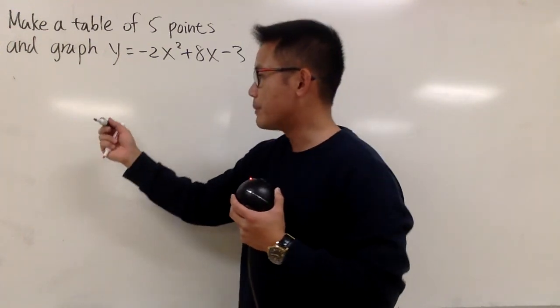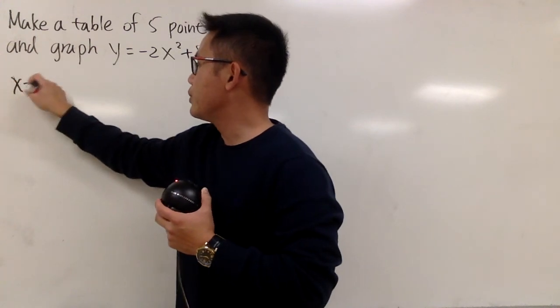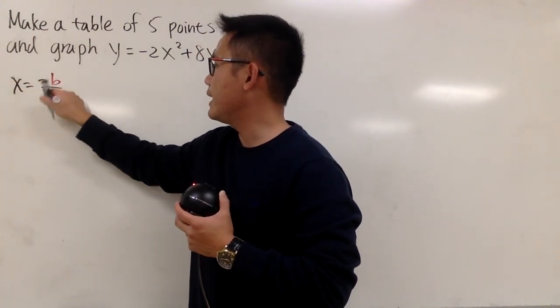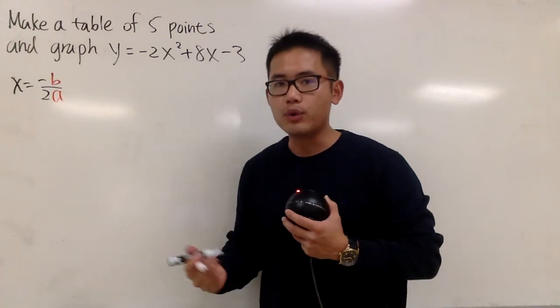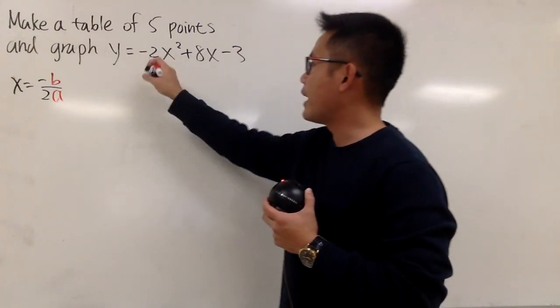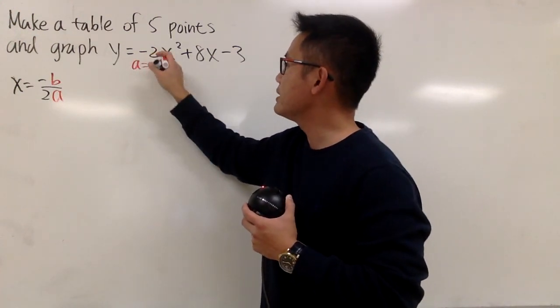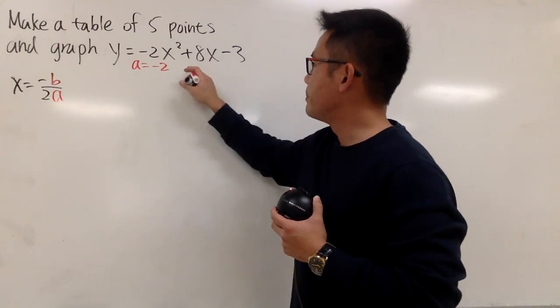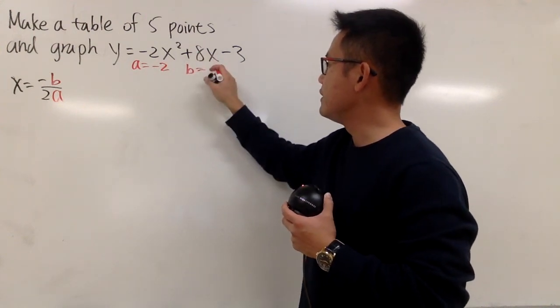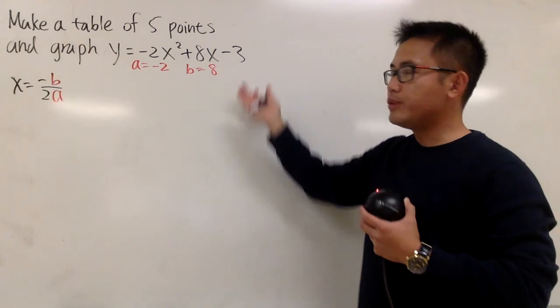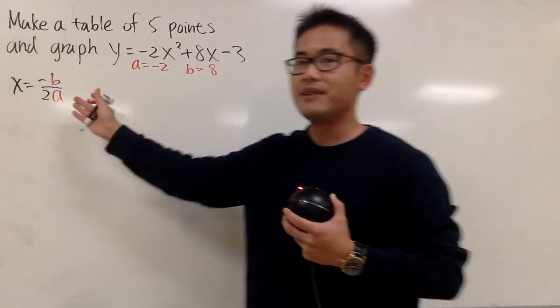So with that being said, remember that x is equal to negative b over 2a. This will give you the x value of the vertex. And right here, the a value is negative 2, and the b value is positive 8. c is negative 3, but we don't need the c in the vertex formula.